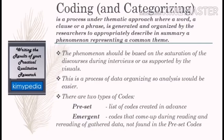Let's go with the coding process — coding process and categorizing. This is the process under thematic approach where a word, a clause, or a phrase is generated, synthesized, and organized by the researchers to appropriately describe in summary a phenomenon representing a common theme. The phenomenon should be based on the saturation of discourses during interviews or as supported by visuals. Make sure there is not just one verbal evidence, but at least a couple, and a couple of visual evidences to support your themes before you start coding them. There are two types of codes: preset codes and emergent codes.